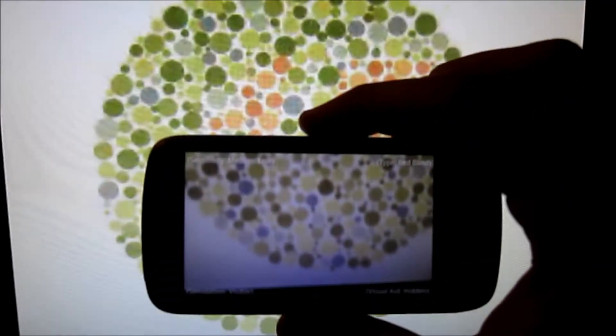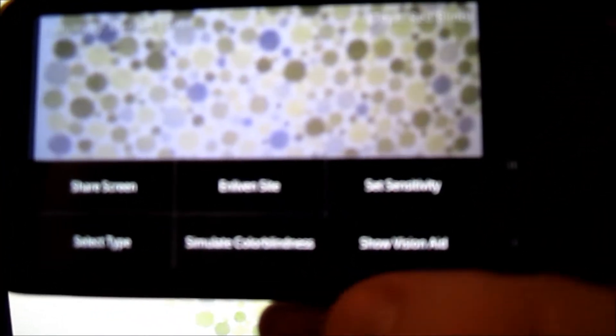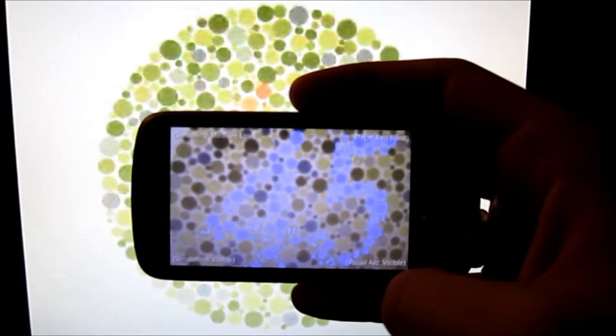You can use Enliven to simulate colorblindness or view an aid for a given colorblindness type. The simulation will use the camera on your device to remove the color the type is blind to. The aid will overlay a color that the colorblind person can easily detect on top of the colorblind color.